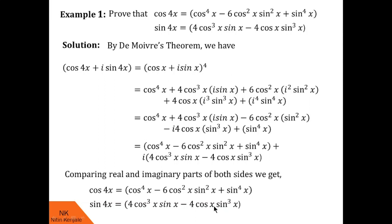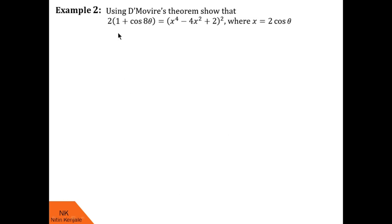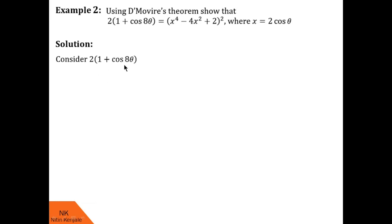Now let us proceed with example number 2. Here we are asked to use De Moivre's theorem to show that 2(1 + cos 8θ) = (x⁴ − 4x² + 2)² where x = 2cosθ. We consider the LHS: 2(1 + cos 8θ). By trigonometric identity, 1 + cos 8θ = 2cos² 4θ. Taking the 2 inside gives 2²·cos² 4θ = (2cos 4θ)².